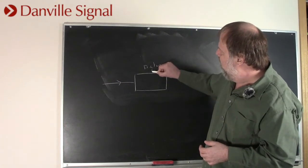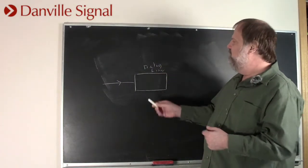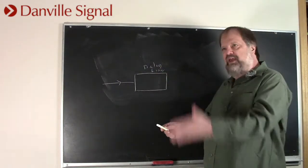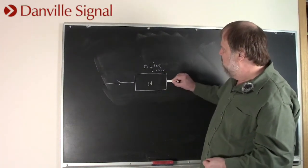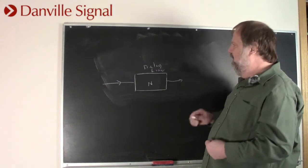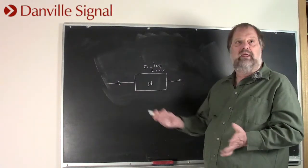This is a delay line, and a delay line just basically, I get a sample, next sample, next sample, next sample, and I have N delays, and out the other end comes essentially an identical signal to what went in.